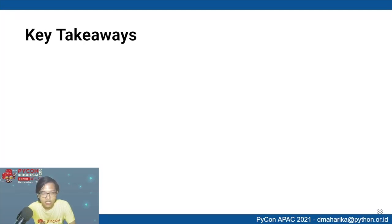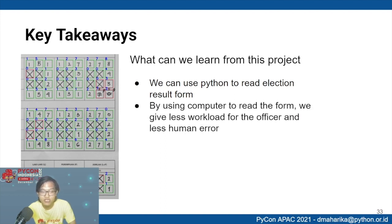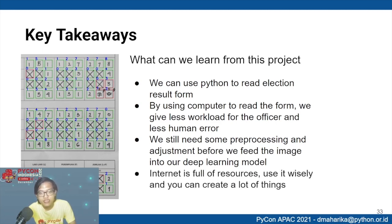Key takeaways from this project: Python can use CNN to read image numbers, and we applied this to read Indonesian general election forms. Using a computer to read the form gives officers less workload and reduces human error. We still need some preprocessing and adjustment before feeding images into the deep learning model. And the internet is full of resources — this project is really based on combining many tutorials, and by combining them we achieved our goals.